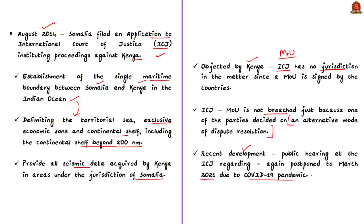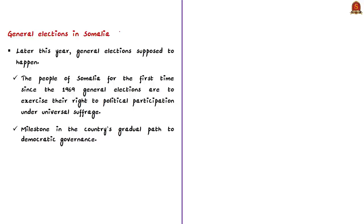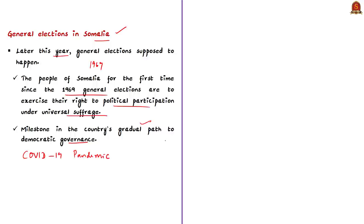One more important issue is the general elections in Somalia. Later this year, the people of Somalia were supposed to exercise the right to political participation under universal suffrage for the first time since the 1969 general elections — a milestone in the country's gradual path to democratic governance. However, due to the health emergency caused by the COVID-19 pandemic, there is doubt as to whether elections will happen in the coming days.